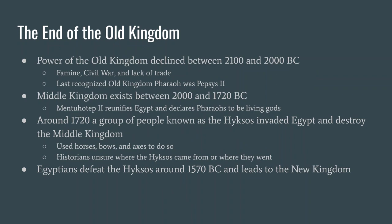All good things come to an end — the Old Kingdom eventually goes away. Somewhere between 2100 and 2000 BC there's a civil war, probably because of famine and lack of food, and things fall apart. Eventually, a king named Mentuhotep II will reunify Egypt, and this is the short-lived Middle Kingdom.